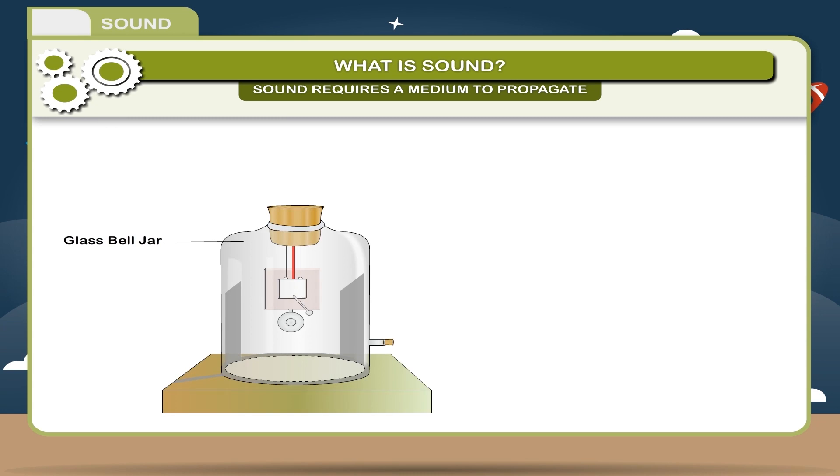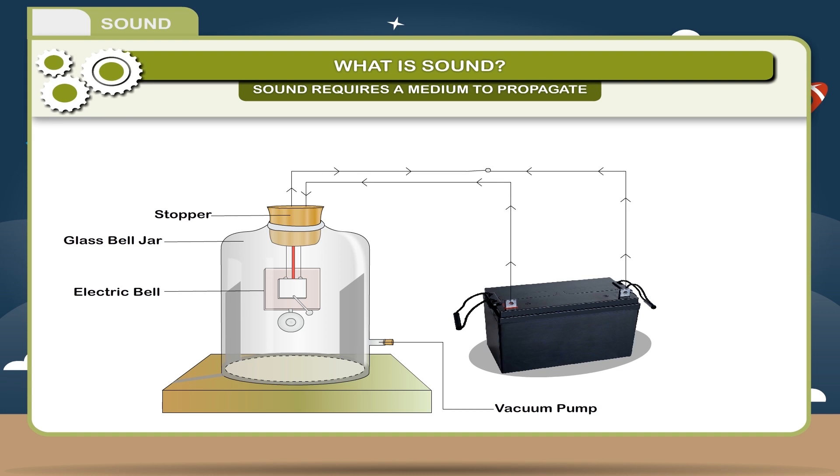Activity. Take a jar fitted with a vacuum pump and sealed by a stopper. Put an electric bell inside. Allow electric current to flow to the bell in the jar with the help of a battery. You will hear the bell ringing.